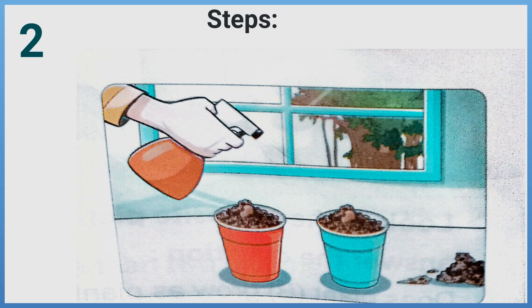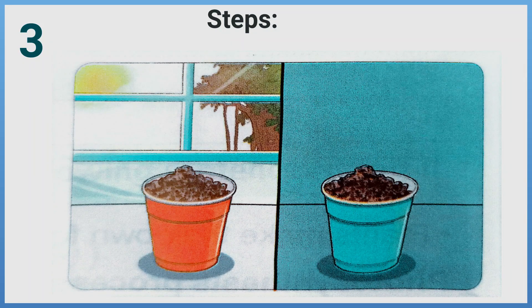2. Add the same amount of water to each cup to moisten the soil. 3. Place the red cup where it will receive light and place the blue cup in the dark.